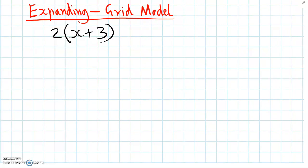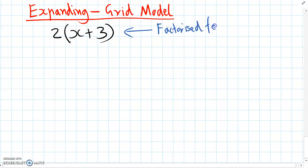In the last video we looked at how to expand expressions when they're in the factorized form, which is like this one here. The factorized form is called that because it's made up of two factors multiplying by each other.